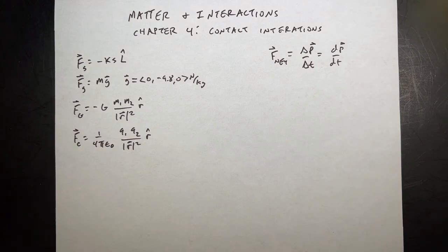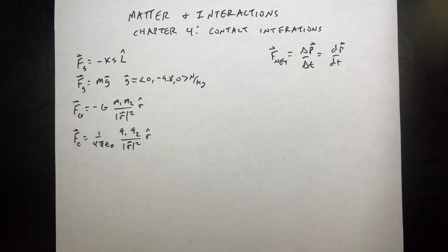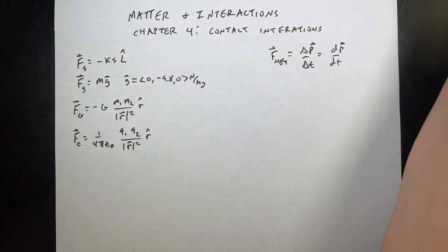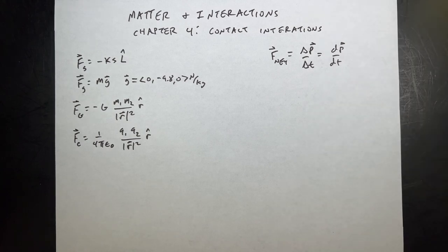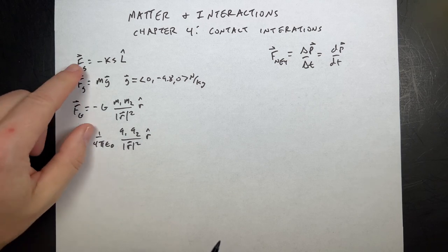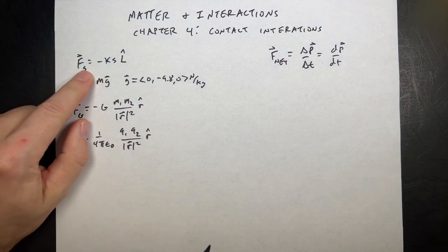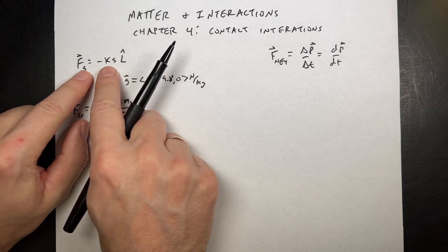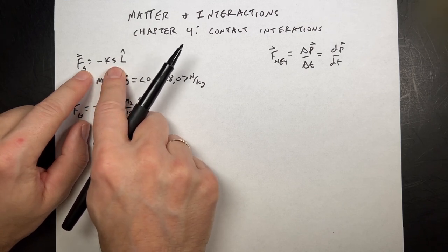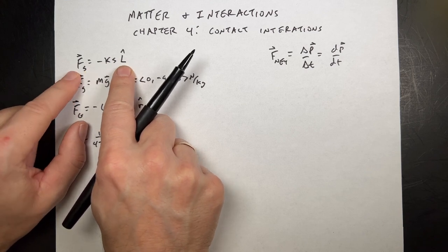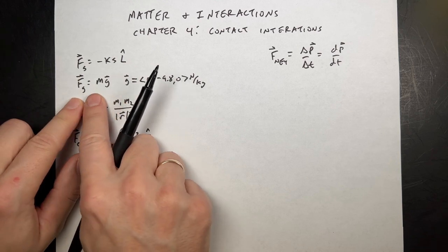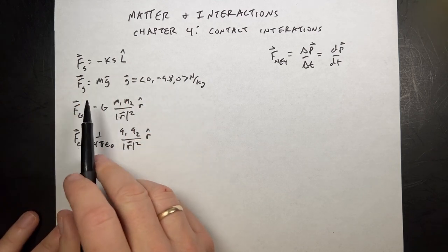But I really want to talk about forces in this chapter. What forces have we talked about so far? So, this is the force due to a spring. K is the spring constant — we'll talk about that in this chapter too. S is the stretch, and L-hat is a unit vector in the direction of the spring. That's an equation we have for the spring force.